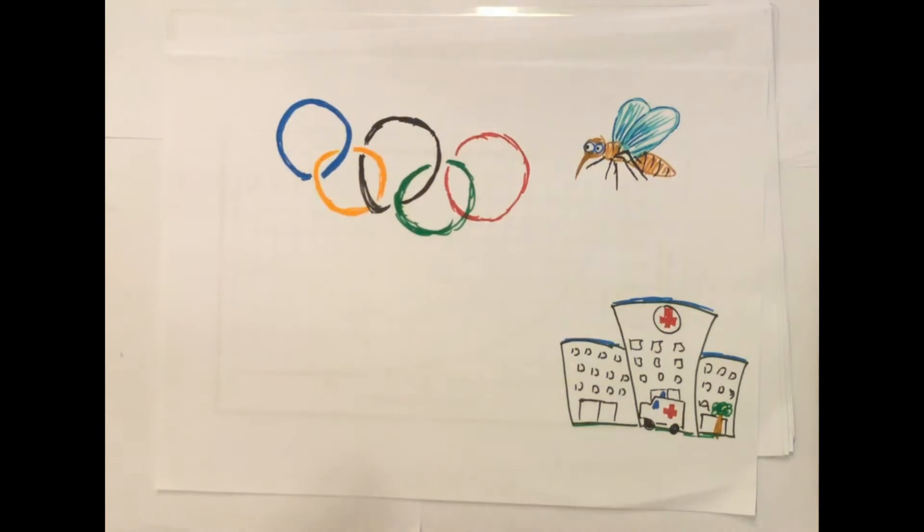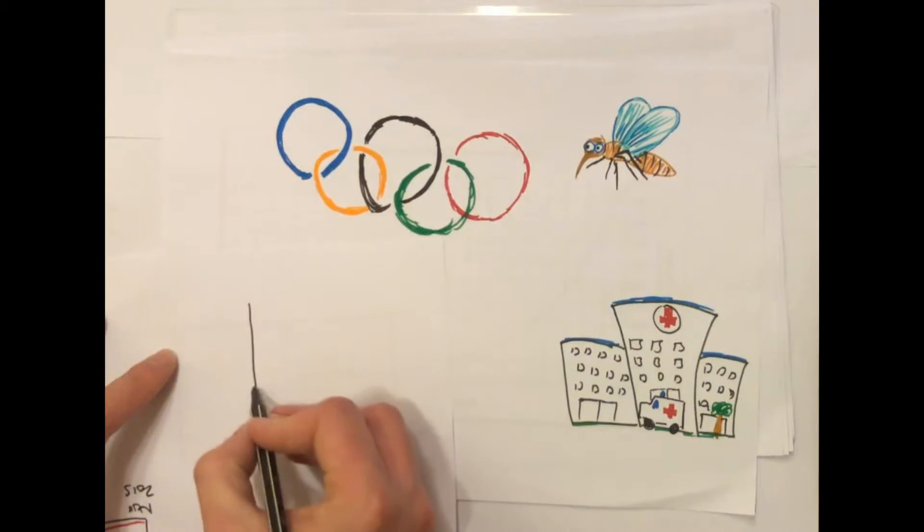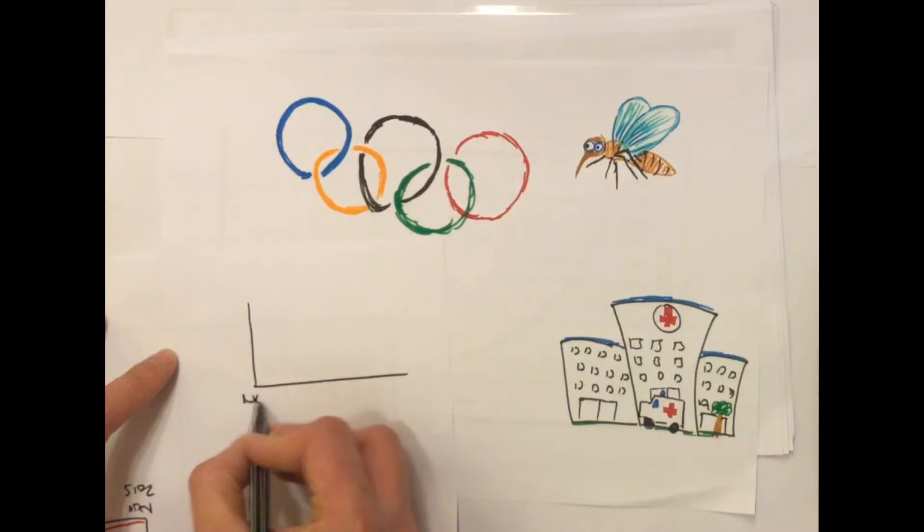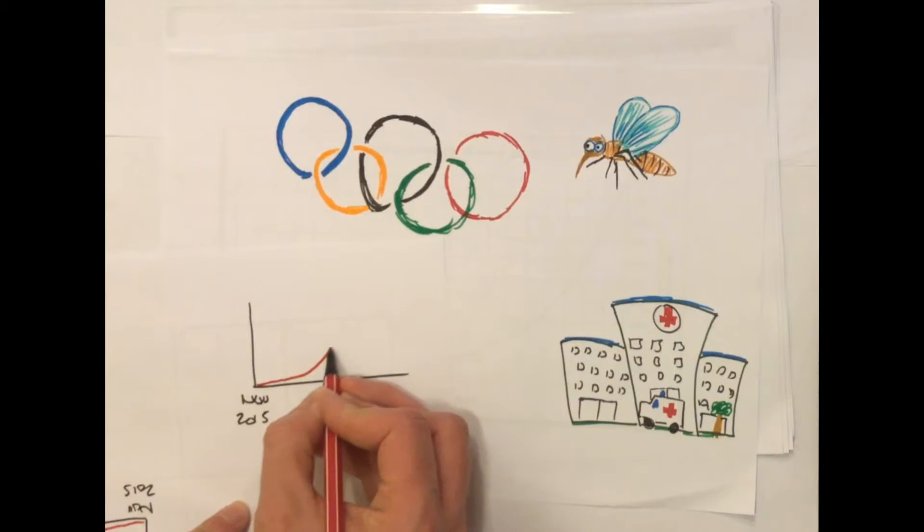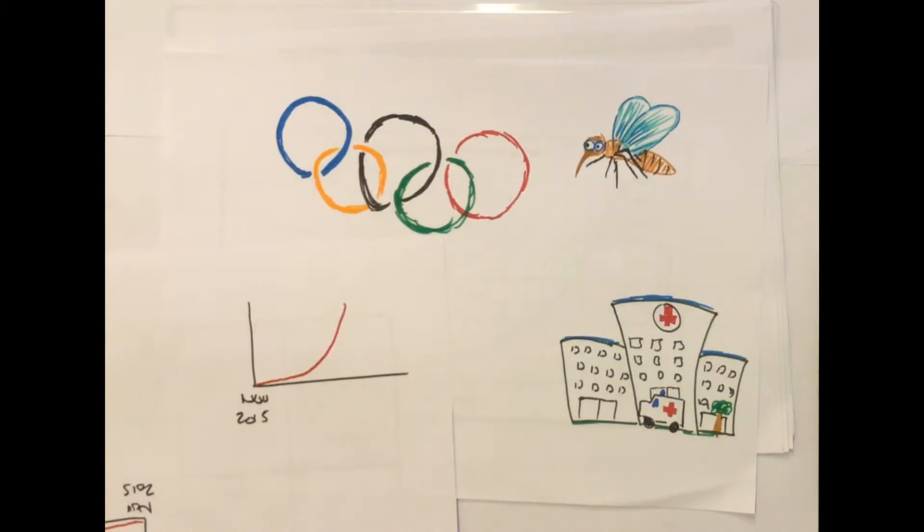Now, the interesting thing about the Zika virus is its rate of growth and number of cases reported. Essentially, back in November of 2015, the cases were like this. And then through to the spring of 2016, this trend happened, an exponential increase in cases reported.